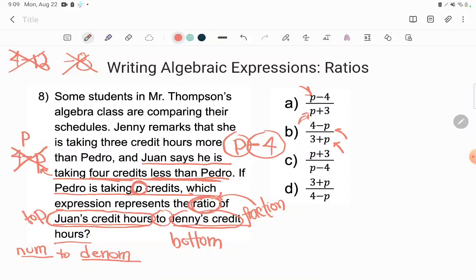So whichever expression is correct for us is going to have four credits less than Pedro in the numerator. So let's see. Oh look, there's only one. Four credits less than Pedro in the numerator. Let's just check for the sake of the problem that our denominator is good as well. So I'm going to go back to that ratio they asked me to write.